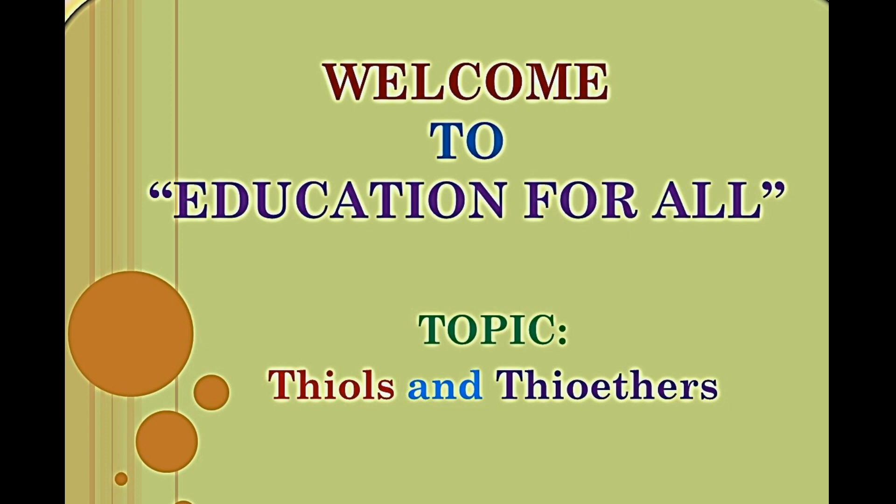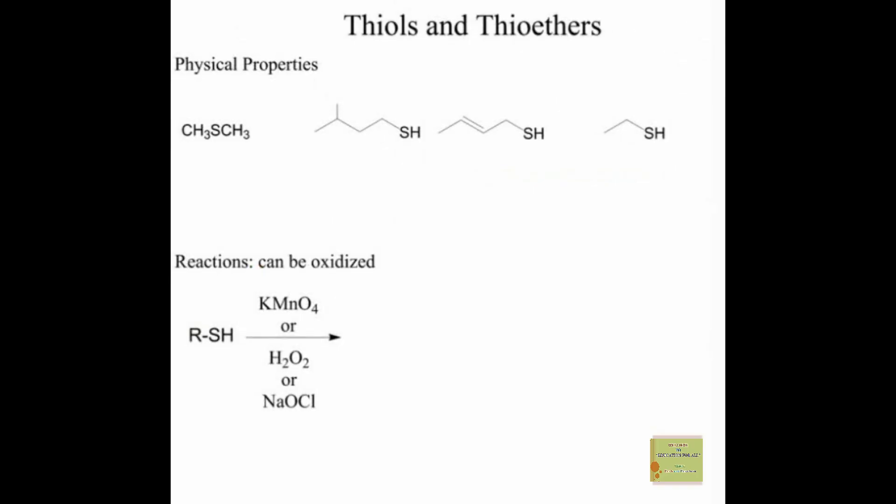Now that we know what alcohols and ethers look like and how they behave, let's take a look at the sulfur analogs of those. They're called thiols and thioethers. When we have a compound with an SH group, we call that a thiol, and when we have a sulfur with an R group on either side, just like if this were an oxygen we'd call that an ether, with the sulfur version we'd call that a thioether.